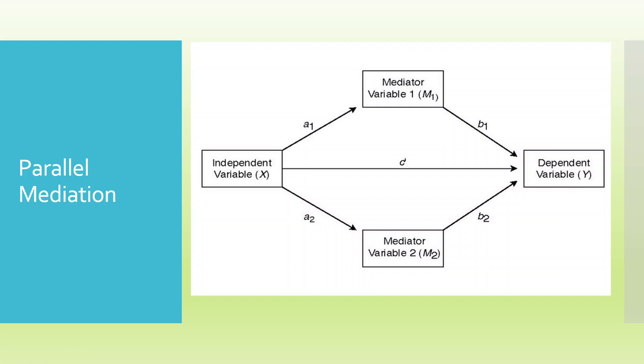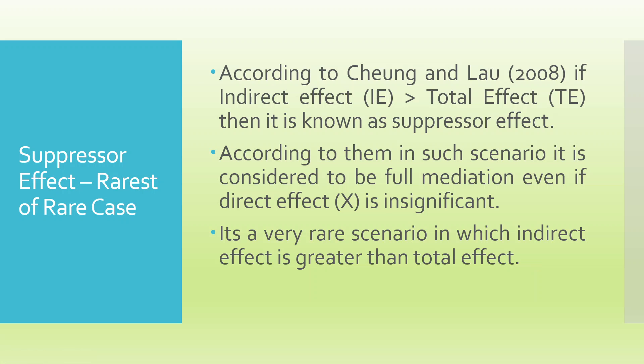In parallel mediation, the child at the same time approaches the father directly and simultaneously takes two different indirect routes — one through the mother (A1, B1) and another through the grandmother (A2, B2). There is also a suppressor effect, which is the rarest of rare cases. According to Cheng and Lau, if the indirect effect is greater than the total effect, it is a suppressor effect. In such a scenario, it is considered full mediation even if the direct effect is insignificant.